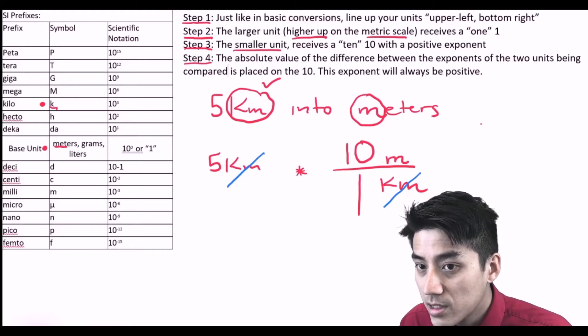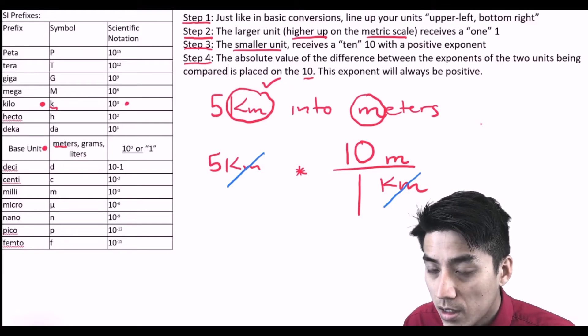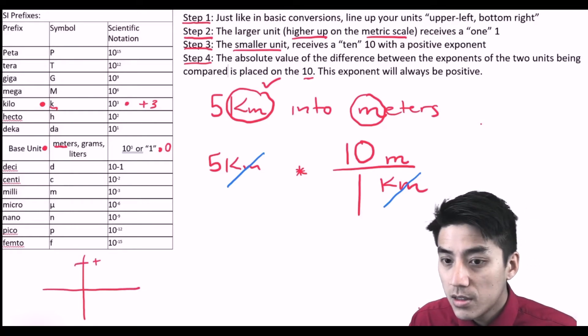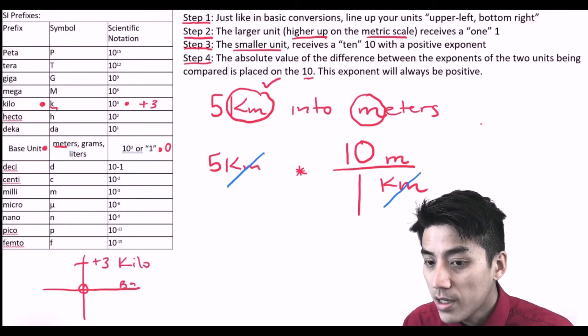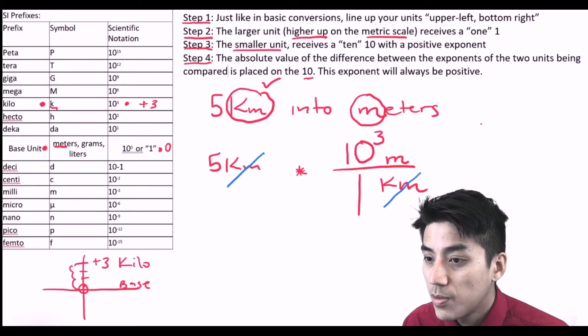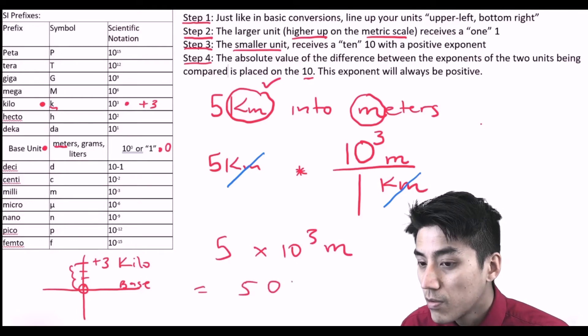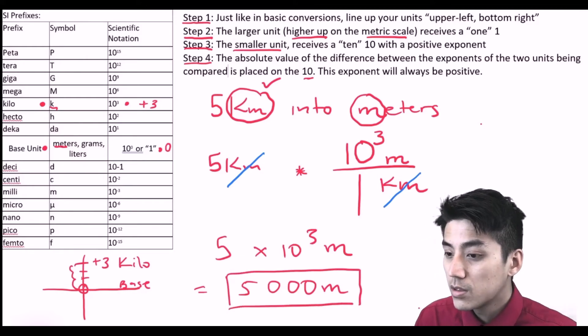Step 4, you have to look under the scientific notation column. Now you're just going to compare your two units. Kilo is at 10 to the positive 3, and your base unit is at 10 to the 0. Pretend this is like a number line. Kilo is at plus 3, that's like his rating. Your base unit has a rating of 0. Pretend it's like an elevator. How many floors apart are they? It turns out it's 3. So I'm going to write a 3 as an exponent. Our answer is 5 times 10 to the 3rd meters, and I can rewrite this in the expanded form. This is 5,000 meters.